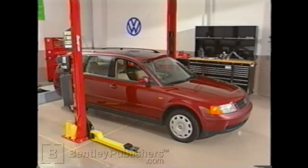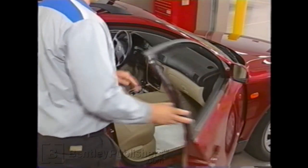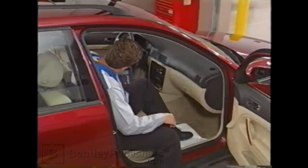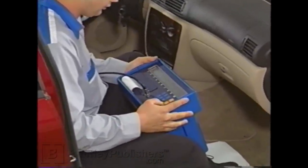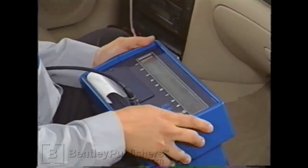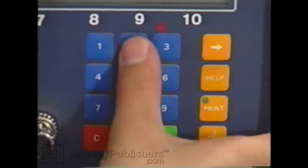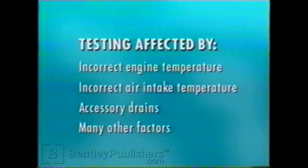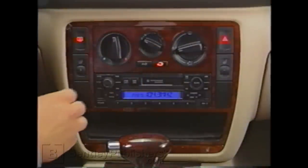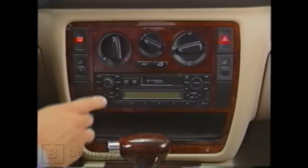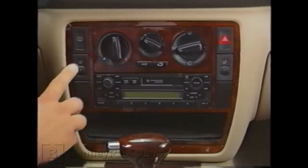Most customer complaints involving the EVAP system will be that the MIL light is on. Use the VAG-1551, 1552, or the VAS-5051 to read the diagnostic trouble codes stored in memory. This DTC will tell you if there is a specific electrical failure in the system or if there is a malfunction such as a leak or EVAP system flow concern. Testing procedures on all vehicles can be affected by incorrect engine temperature, incorrect air intake temperature, accessory drains, and many other factors. Make sure to check the service information system for other factors, turn off all accessories including air conditioning before running any tests.